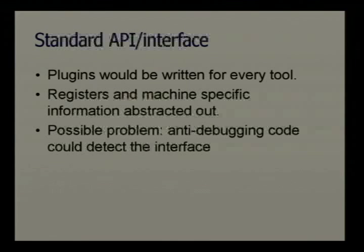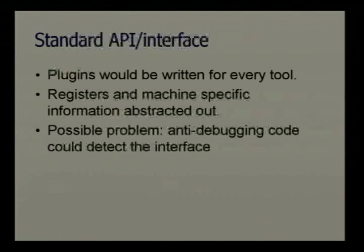For this to work, a plugin has to be written for every tool that complies to the interface. Register and machine-specific information can be abstracted out — doesn't matter if it's ARM, x86, or SPARC. There are some problems though: it would not be very effective for reversing malware or software protection. Anytime you have a set interface like this, anti-debugging code is going to catch it. So this is more for reversing functionality and looking for vulnerabilities in products.